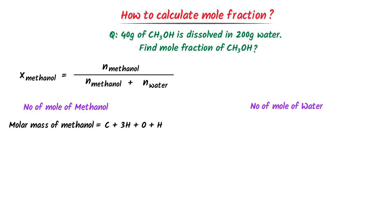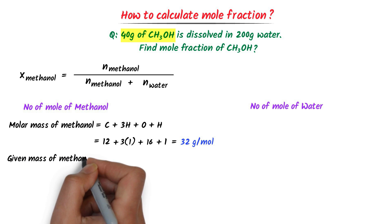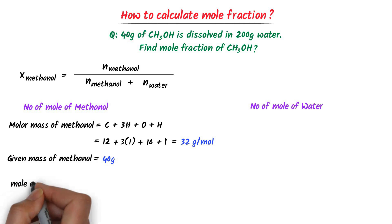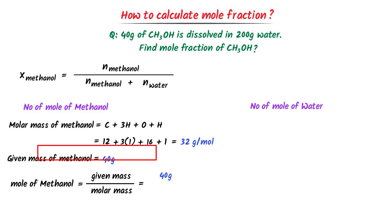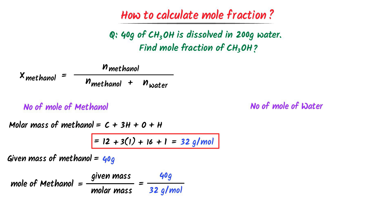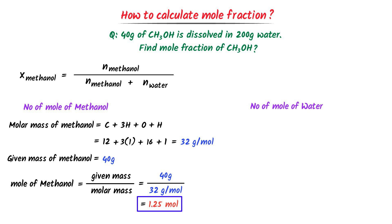Methanol is CH₃OH: one carbon plus three hydrogen atoms plus one oxygen plus one hydrogen. The molar mass of carbon is 12, hydrogen is 1, and oxygen is 16. After calculation, I get 32 grams per mole. Hence the molar mass of methanol is 32 g/mol. The given mass of methanol is 40 grams. Number of moles of methanol equals 40 g divided by 32 g/mol, giving 1.25 moles.